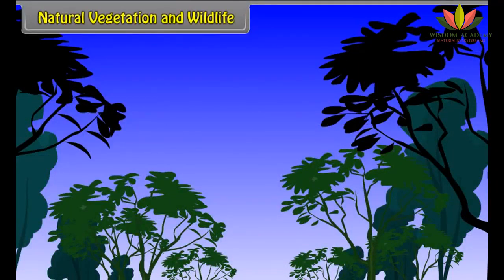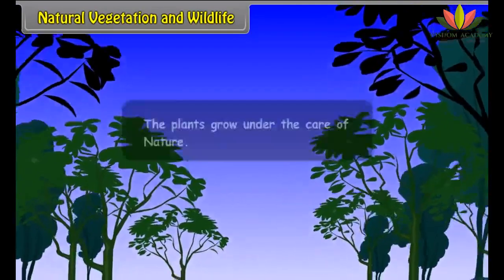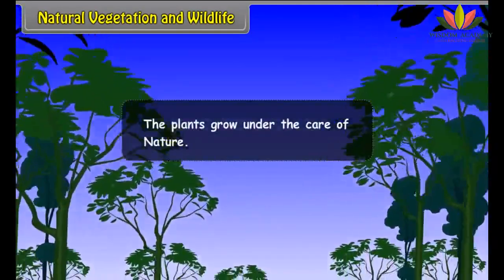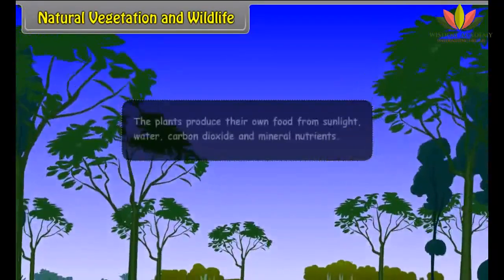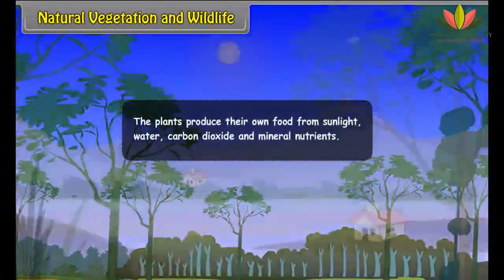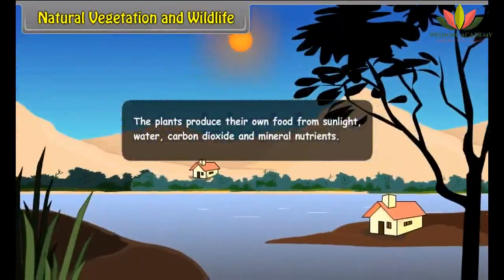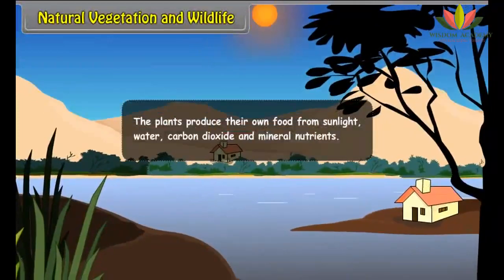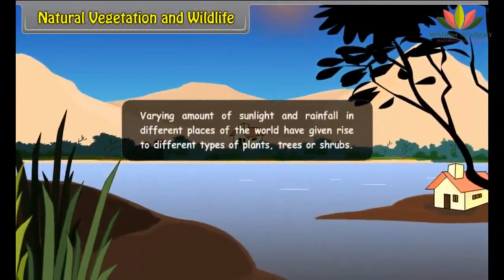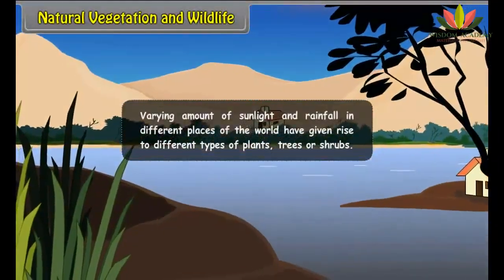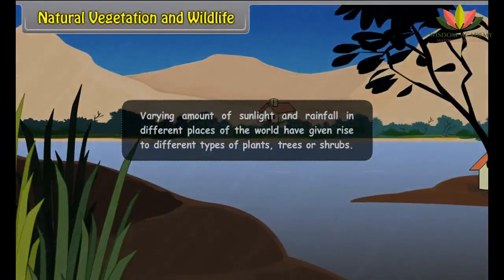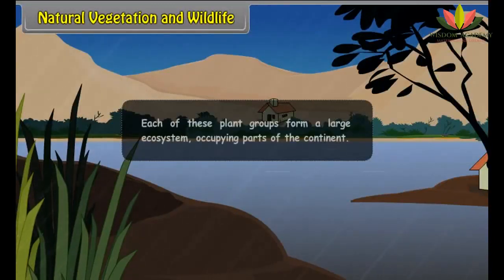The plants grow under the care of nature. The plants produce their own food from sunlight, water, carbon dioxide and mineral nutrients. Varying amounts of sunlight and rainfall in different places of the world have given rise to different types of plants, trees or shrubs. Each of these plant groups forms a large ecosystem occupying parts of the continent.